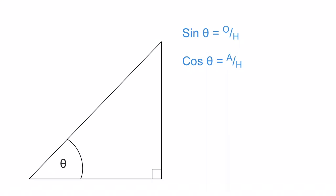We've got one more. We can say that the tangent of our designated angle, or the tangent of theta, is equal to our opposite over our adjacent. And those are the three trig functions we're going to use: sine, cosine, and tangent.